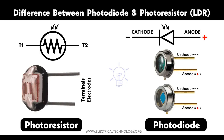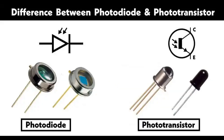Avalanche mode: In avalanche photodiodes (APDs), a high reverse bias voltage is applied, causing avalanche multiplication. The incident photons create electron-hole pairs, which gain enough energy to create additional pairs through impact ionization. This results in a large gain and is useful for detecting very low light levels.